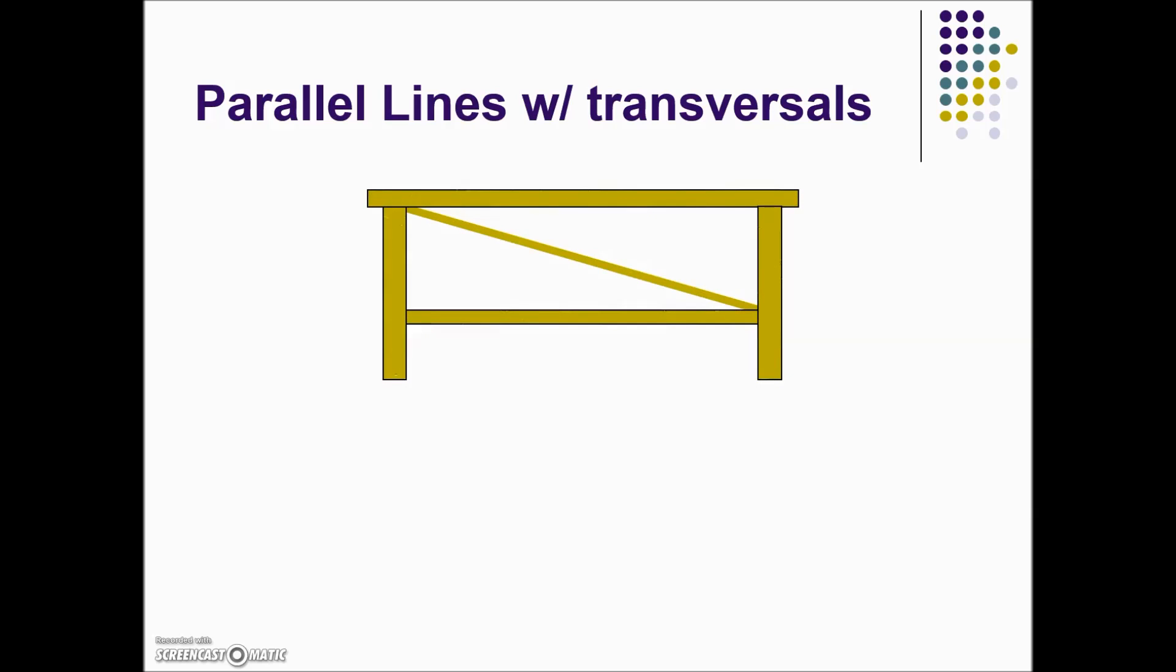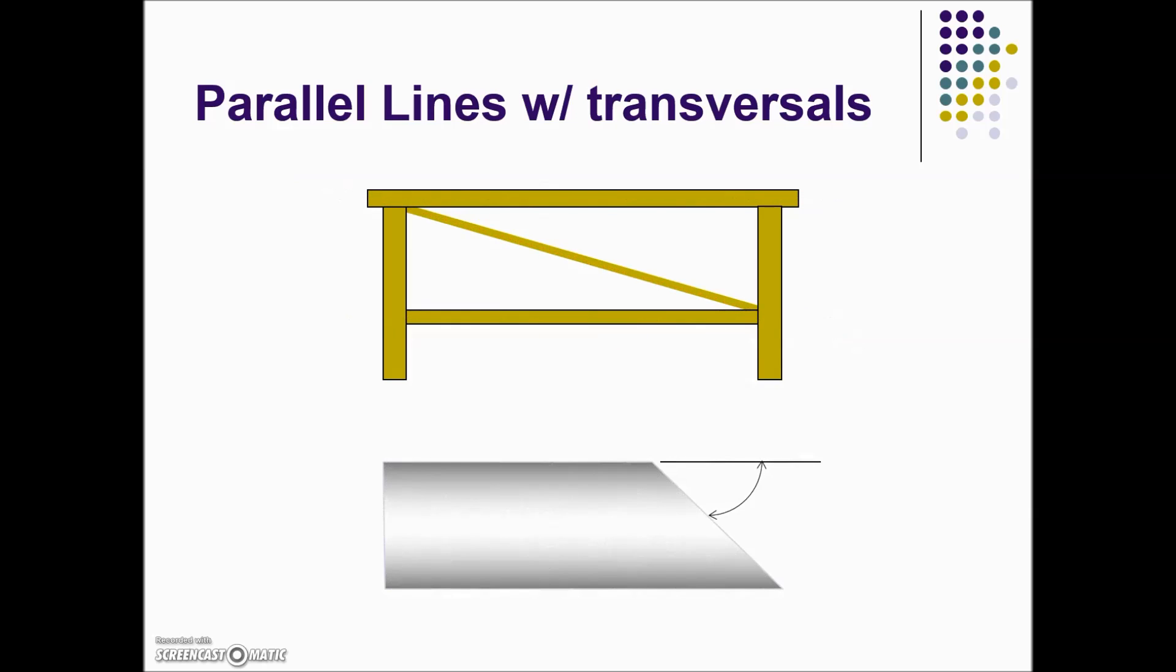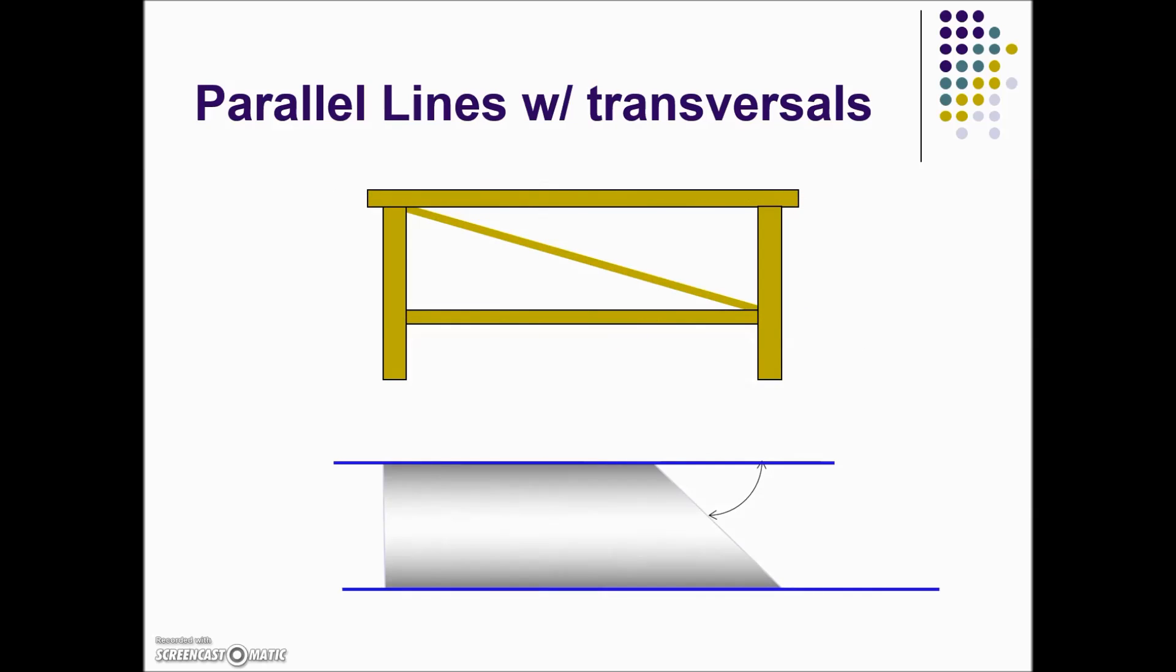We see examples of parallel lines with a third line cutting them in many applications, here in construction, as well as in a welding application where we have parallel lines using the edge as our transversal. We have corresponding angles and from corresponding angles we can also find relationships of equal angles with vertical angle relationships as well.